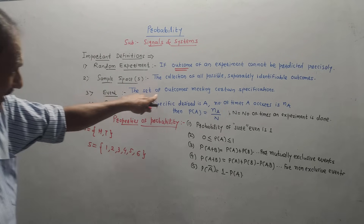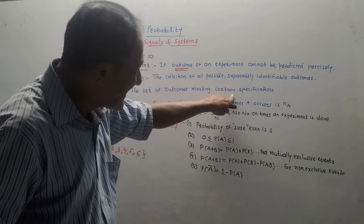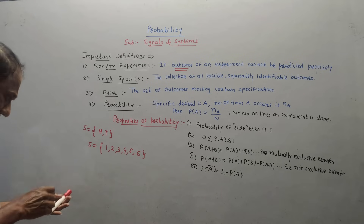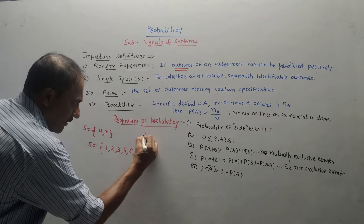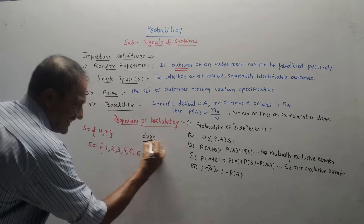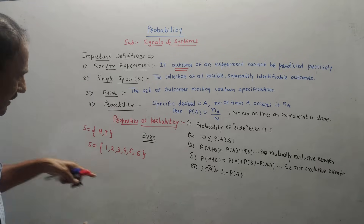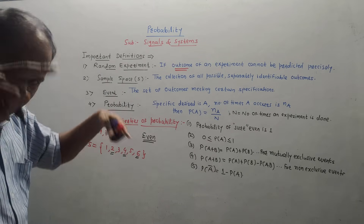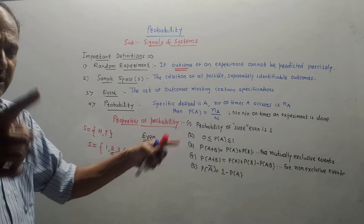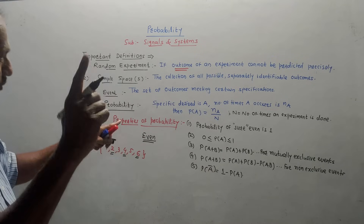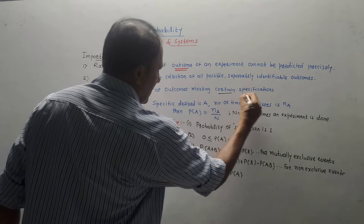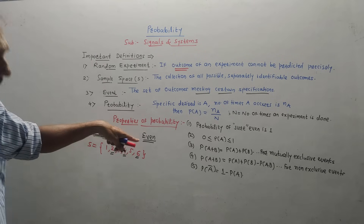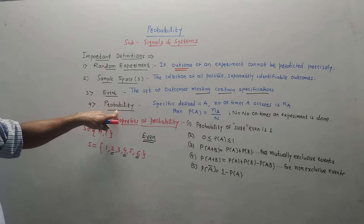Next is event: the set of outcomes meeting certain specifications. For example, if I am talking about throwing a die and the event is to collect all even numbers, then the sample space for that event will contain 2, 4, and 6. This is the condition — the output must be an even number. Events can also specify that the number should be odd, divisible by a given value, etc.